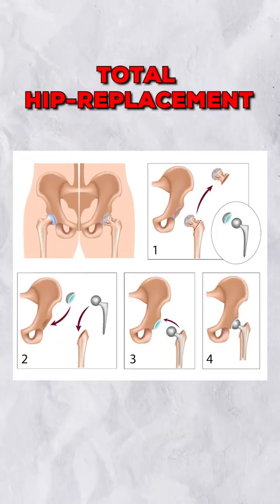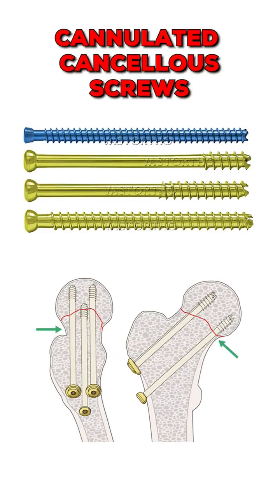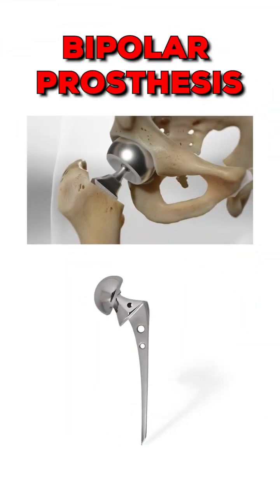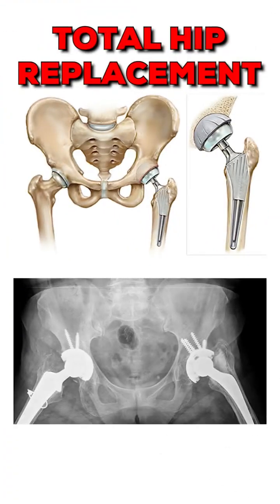For osteosynthesis, the implant of choice is CC screws. For hemi-arthroplasty, the implant of choice is a bipolar prosthesis. And for total hip replacement, you use the complete set of total hip replacement implants. Thank you.